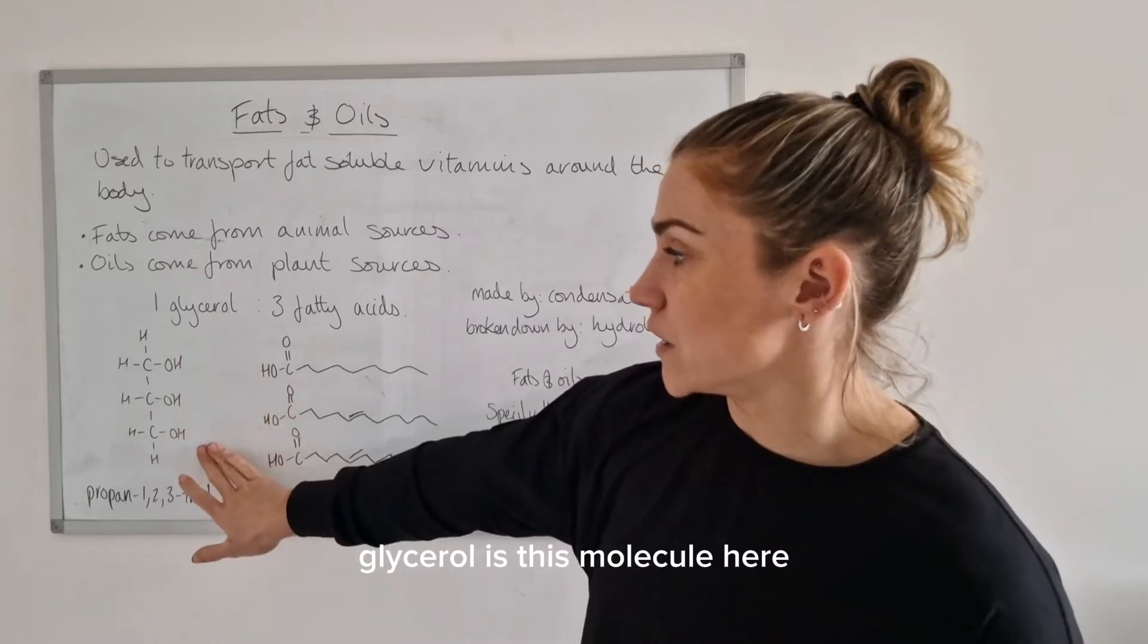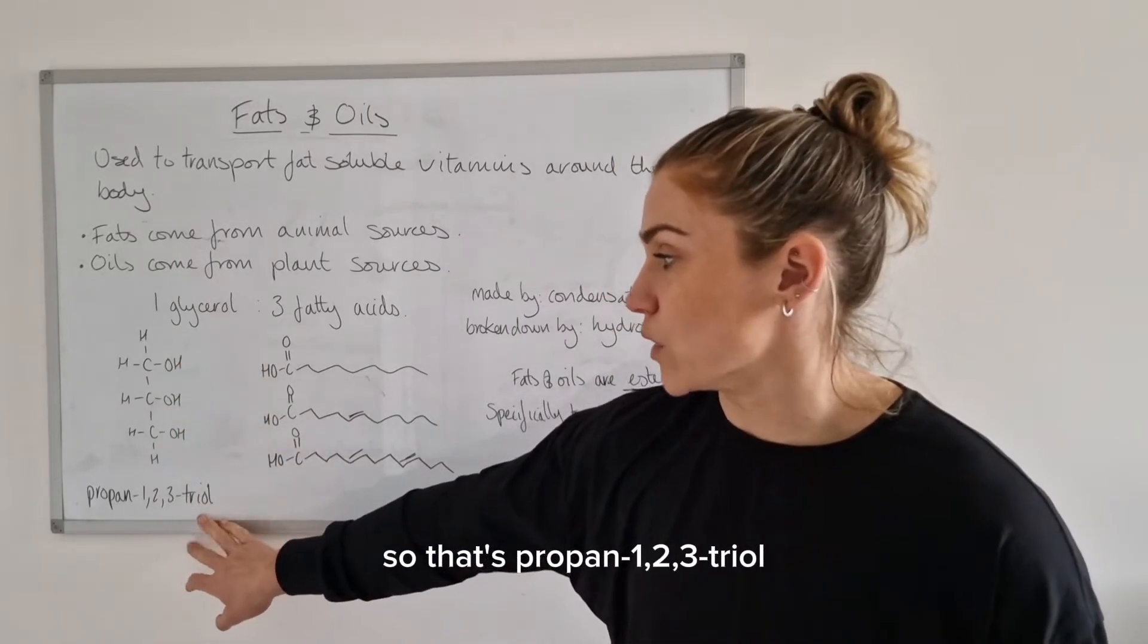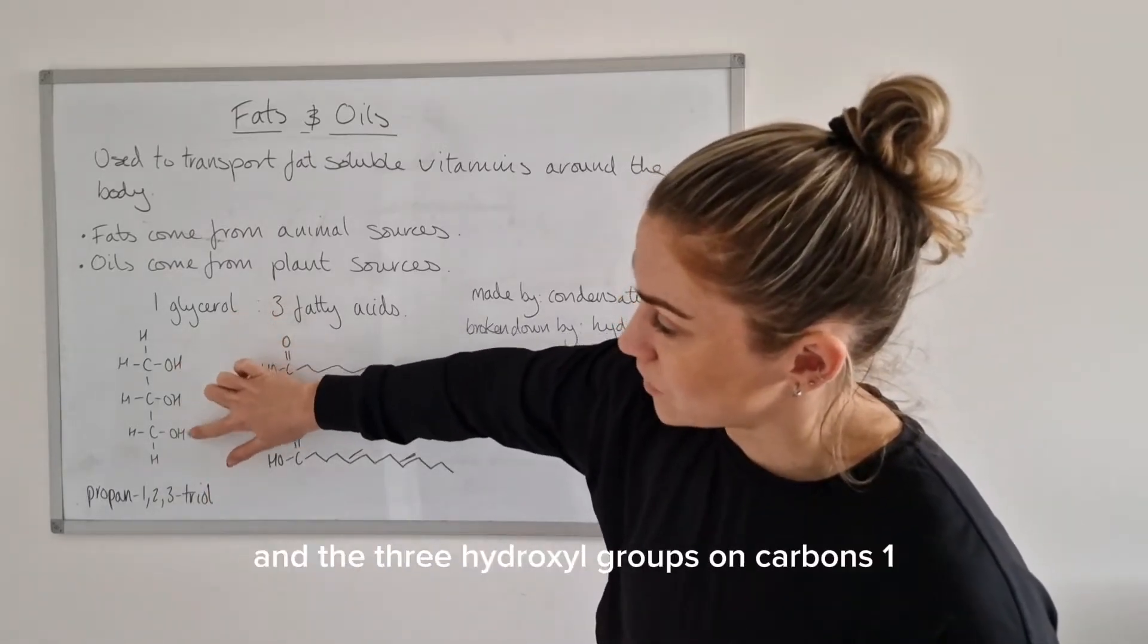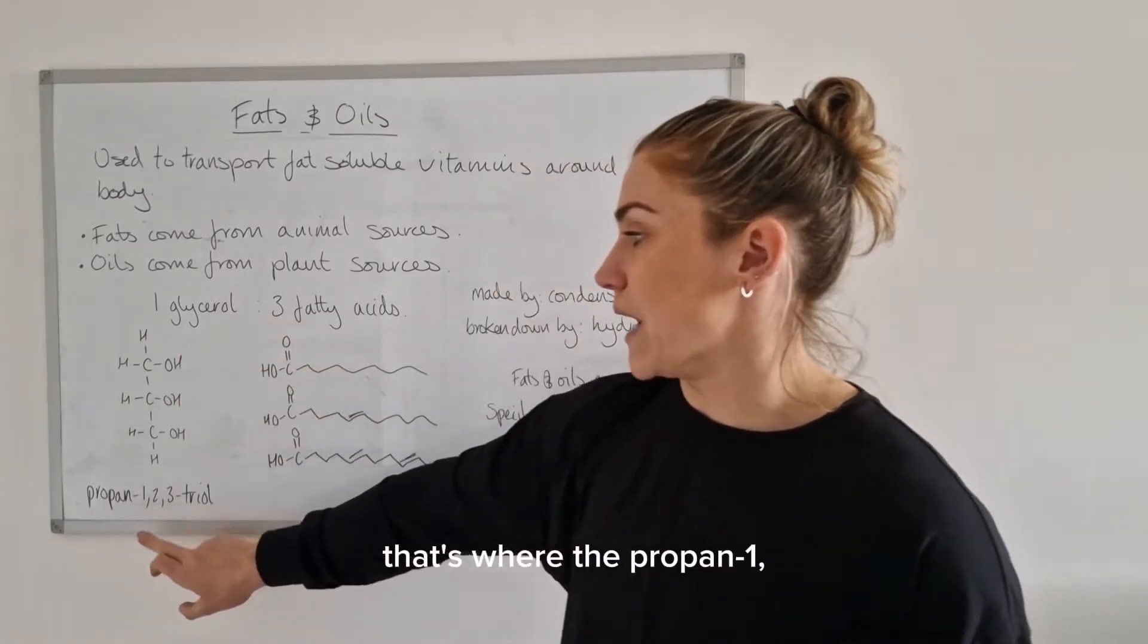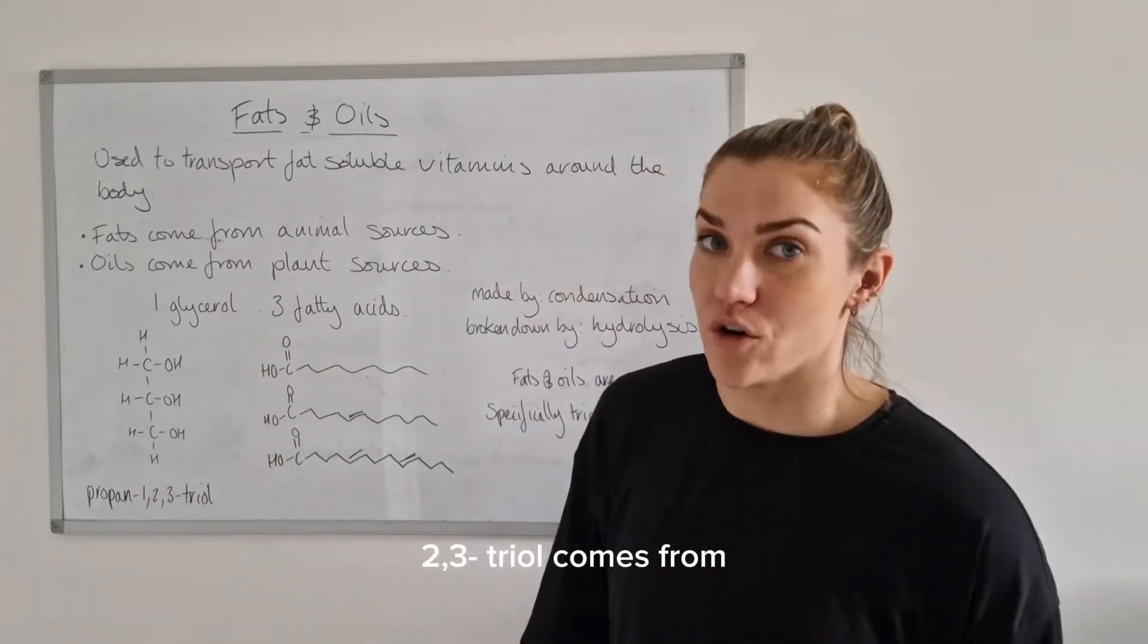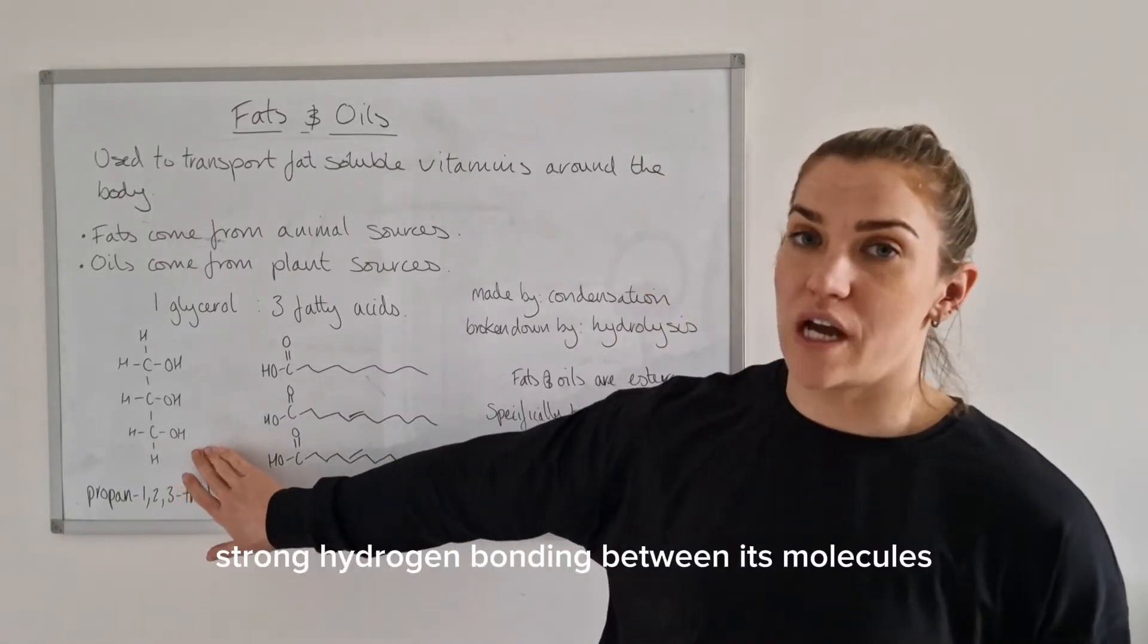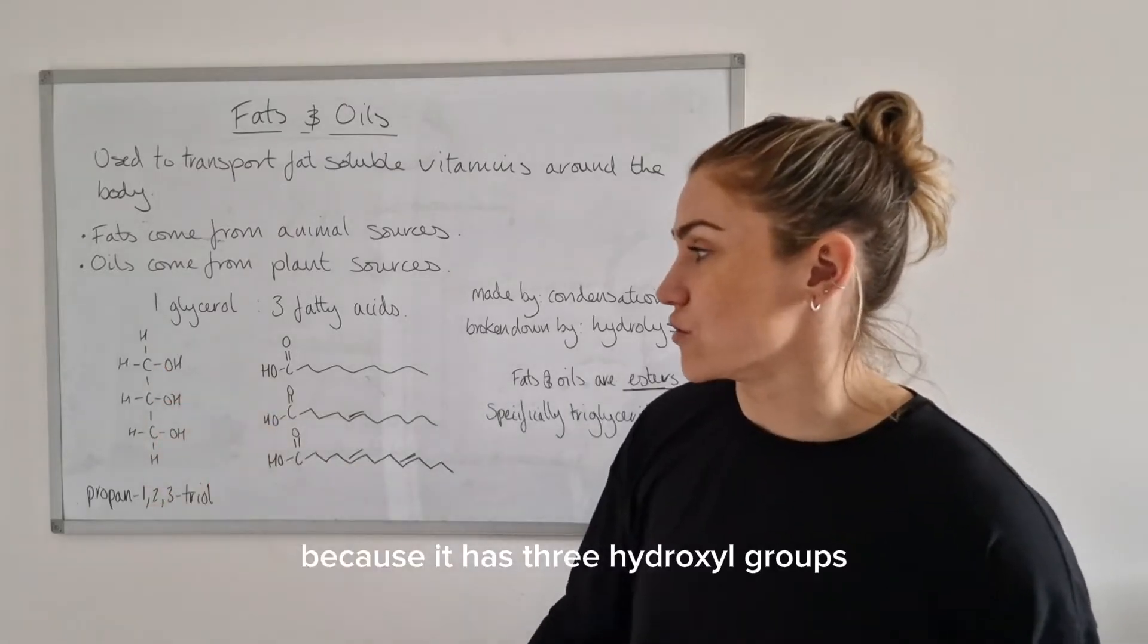Glycerol is this molecule here which you will need to know the systematic name of. That's propan-1,2,3-triol - it's got the three carbons and the three hydroxyl groups on carbons 1, 2 and 3. It is an alcohol and it's got extremely strong hydrogen bonding between its molecules because it has three hydroxyl groups.